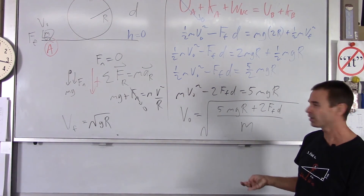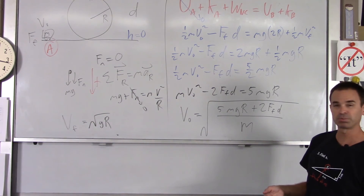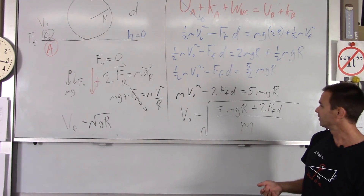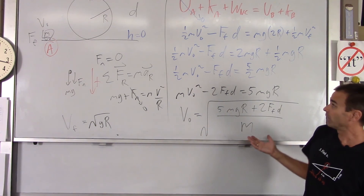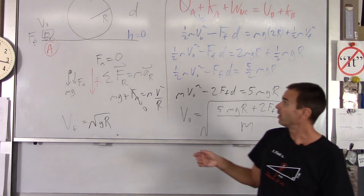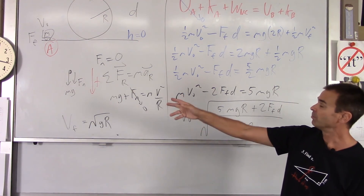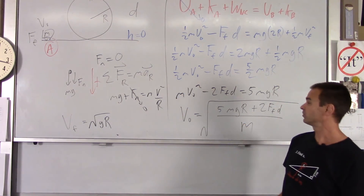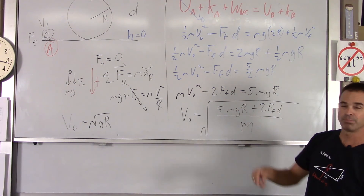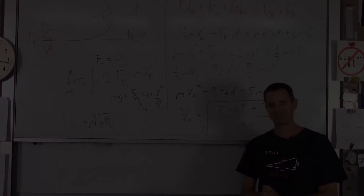There's a nice expression for v₀, and that's a tidy example of using conservation of energy to study the motion of an object going from point A to point B. Thank you very much.